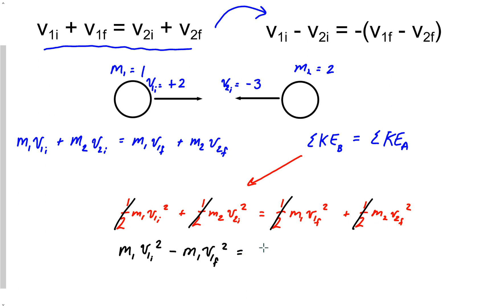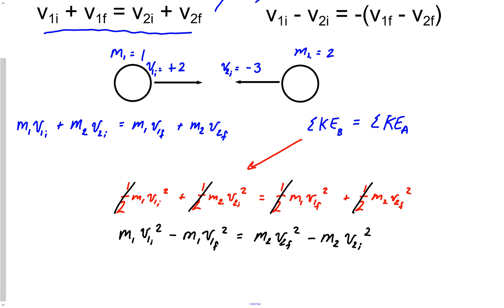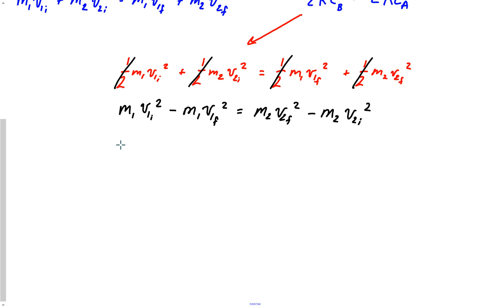So now if you look, I'm going to have M1 V1 initial squared minus M1 V1 final squared. And now I'm going to do the same thing on the other side. I'm going to have M2 V2 final squared minus M2 V2 initial squared. And the next thing I'm going to do is actually factor out the M1s.